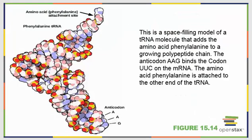The processing of ribosomal RNA and transfer RNA works differently than mRNA processing. Enzymes cleave their precursor molecules, and their final links undergo processes like hydrogen bonding to bring the RNAs into their final 3D structures. They can be transported out of the nuclear envelope into the cytoplasm to complete some processing and then start their jobs. Shown here is a space-filling model of a tRNA molecule. The anticodon AAG binds to the codon UUC on the mRNA, and the amino acid phenylalanine is attached to the other end of the tRNA.